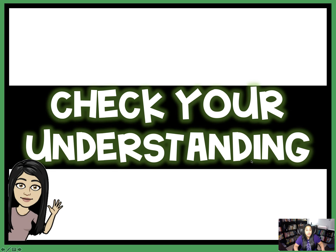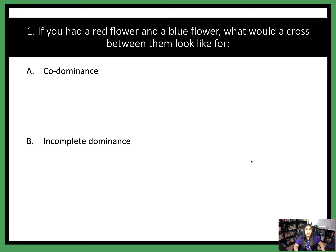Now you're going to move to your check your understanding page on the opposite side. I want you to go ahead and try this: if you had a red flower and a blue flower, what would a cross between them look like for A, co-dominance, and B, incomplete dominance? Go ahead and give it a try. If you need to pause the video at any time, go ahead and pause so that you can think before you keep watching.